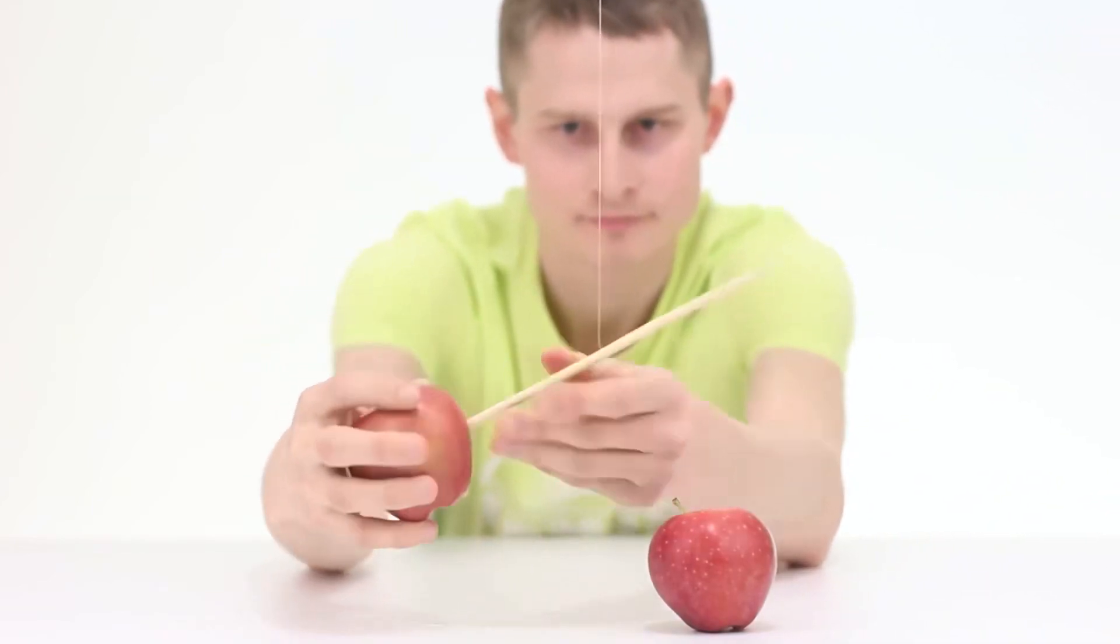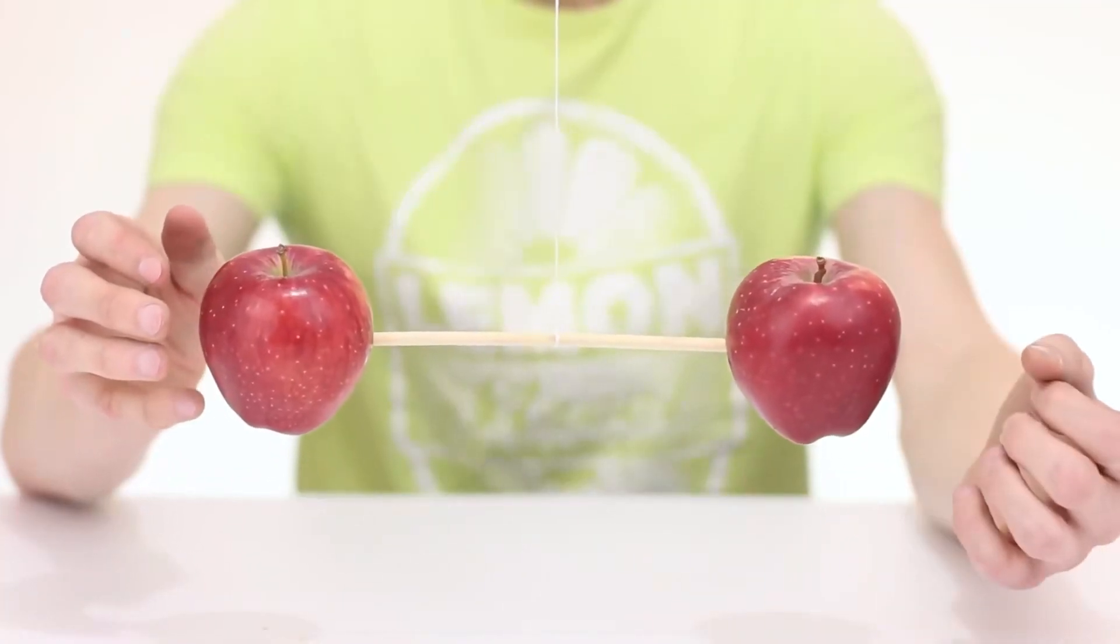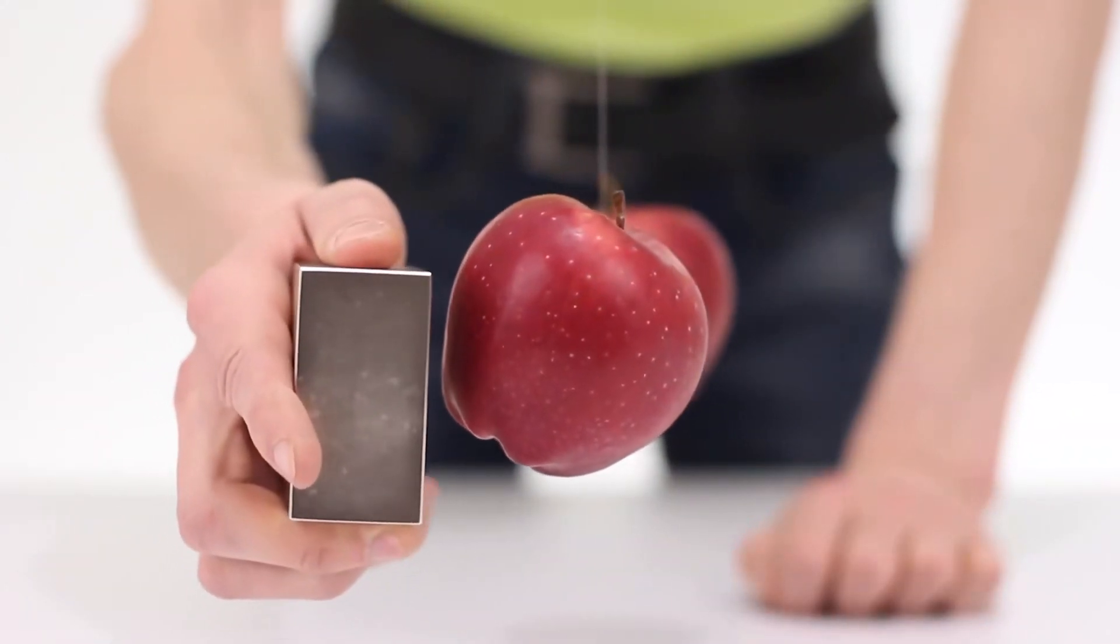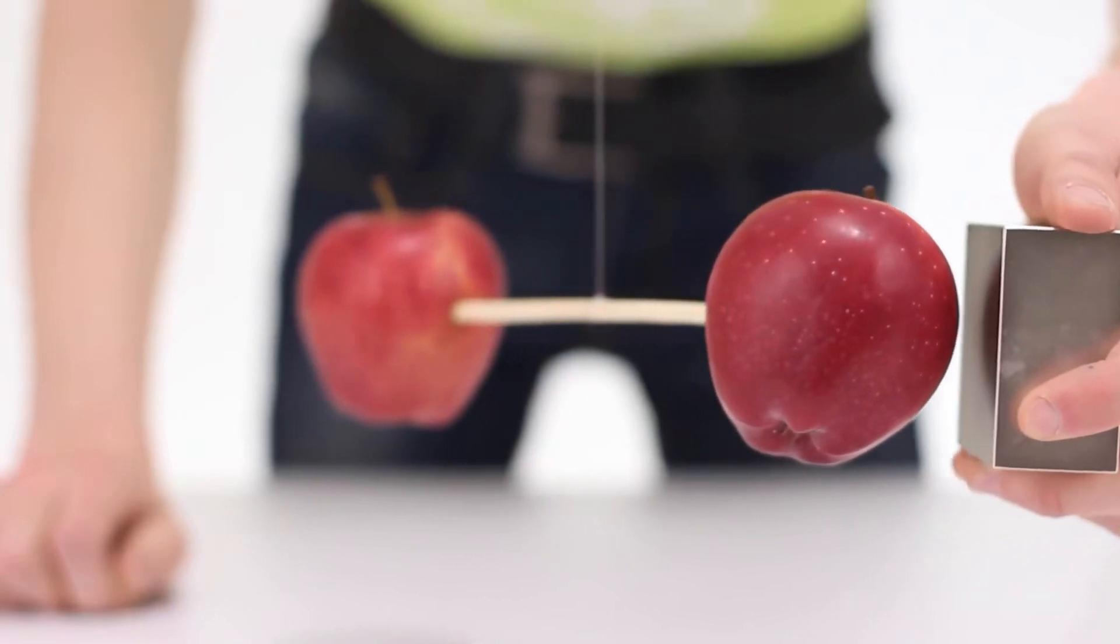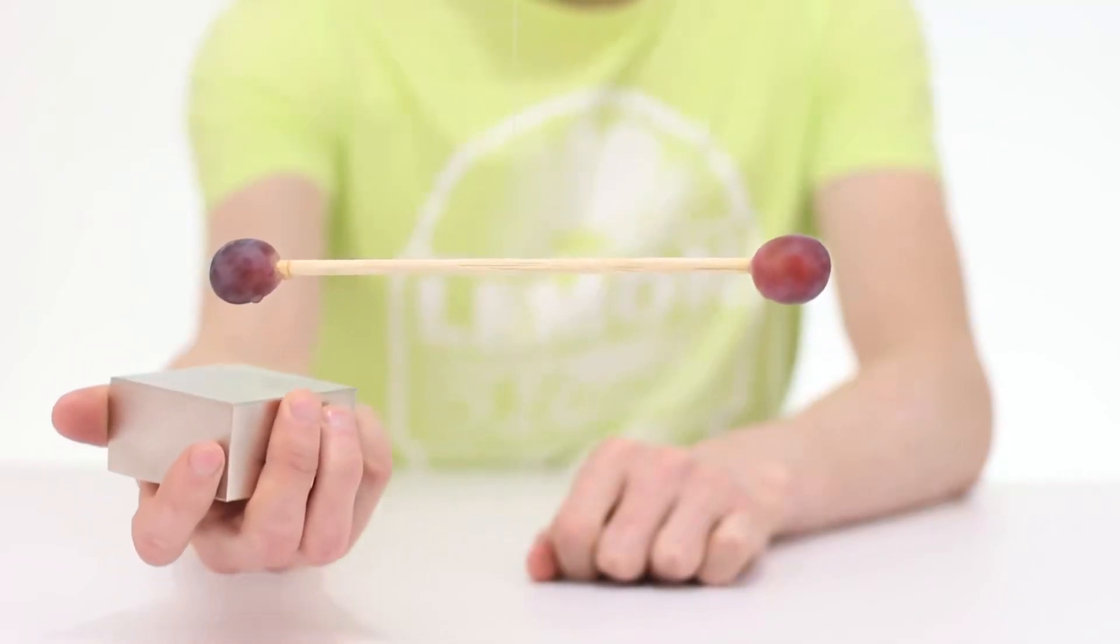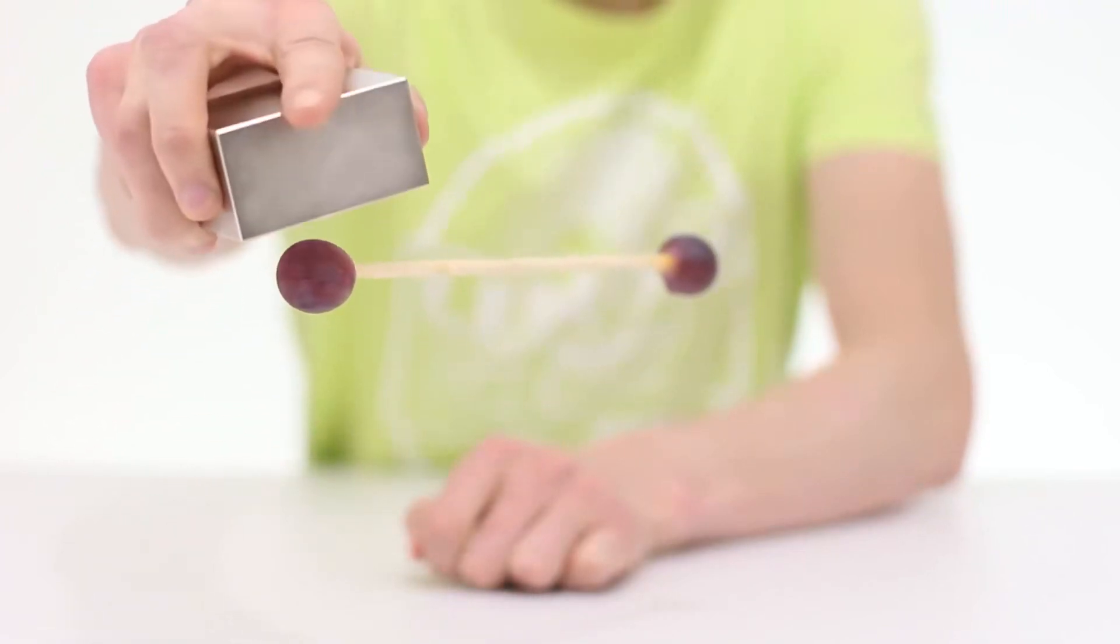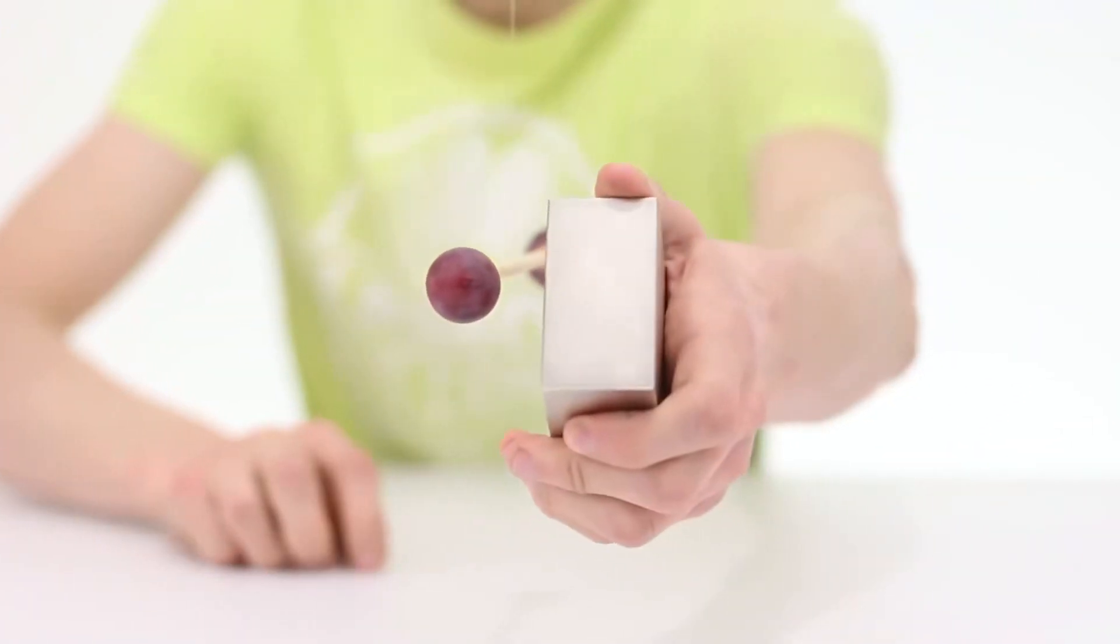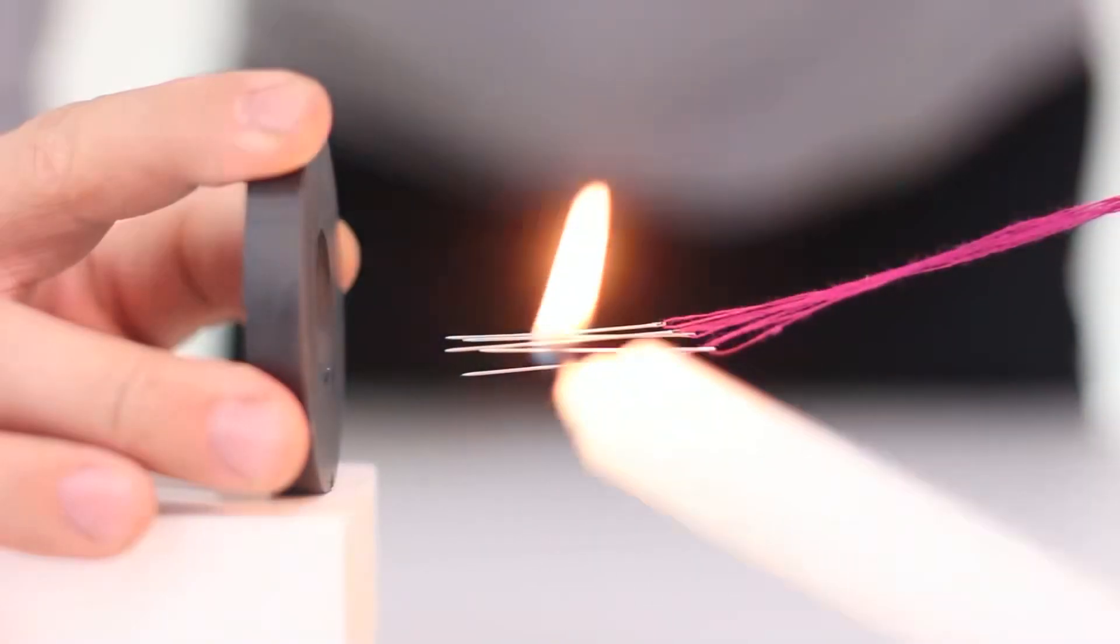Let's take an ordinary apple and a large magnet. Of course, the magnet does not affect the apple in any way. But what if you put two apples on a wooden stick and balance them in the air? Now, you can see that the magnet still causes small fluctuations in the apple. It seems that there really is a lot of iron in this fruit. This trick is also great with grapes. Who would have thought that fruits and berries can be magnetic?